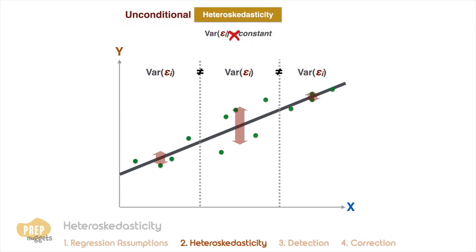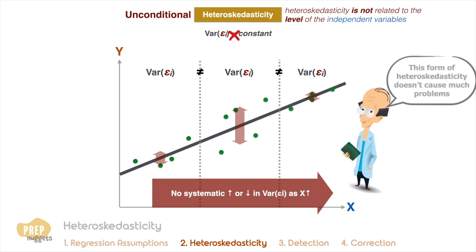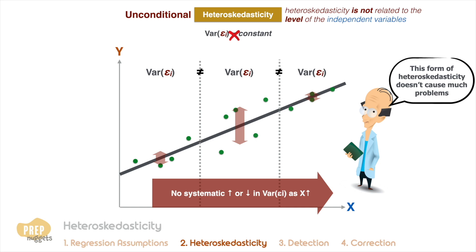Unconditional heteroscedasticity occurs when the heteroscedasticity is not related to the level of the independent variables, which means that it doesn't systematically increase or decrease with changes in the value of the independent variable. While this is still a violation of the equal variance assumption, it usually causes no major problems with the regression.